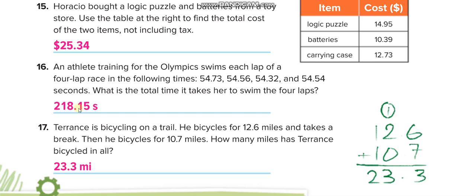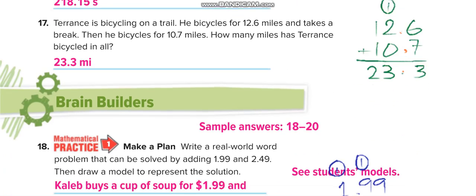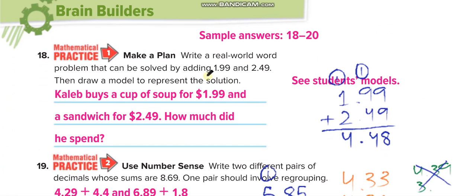Terrance is bicycling on a trail. He bicycles for 12.6 miles and takes a break, then he bicycles for 10.7 miles. How many miles has Terrance bicycled in all? You add both of them here. We added it—12.6 and 10.7. It's 23.3.